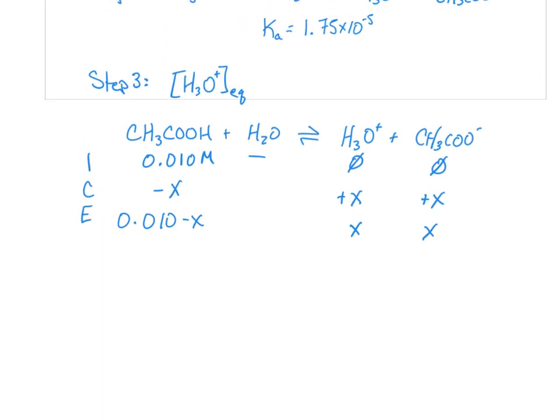So I can set up my equilibrium expression as Ka is equal to the concentration of H3O+ times the concentration of the acetate divided by the concentration of the acetic acid.